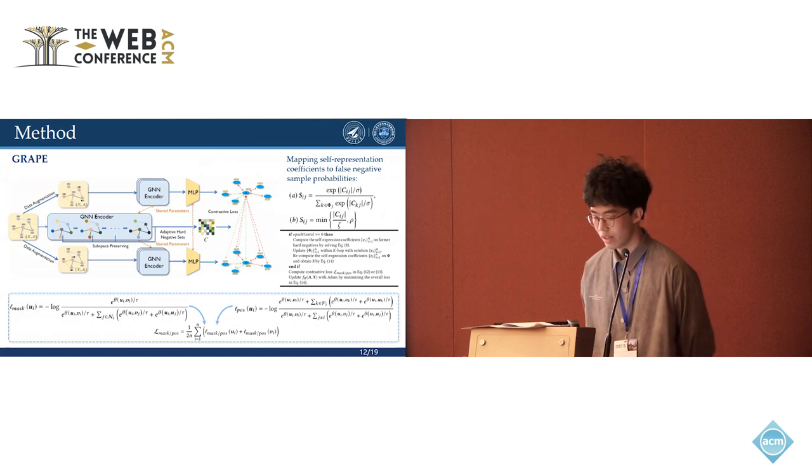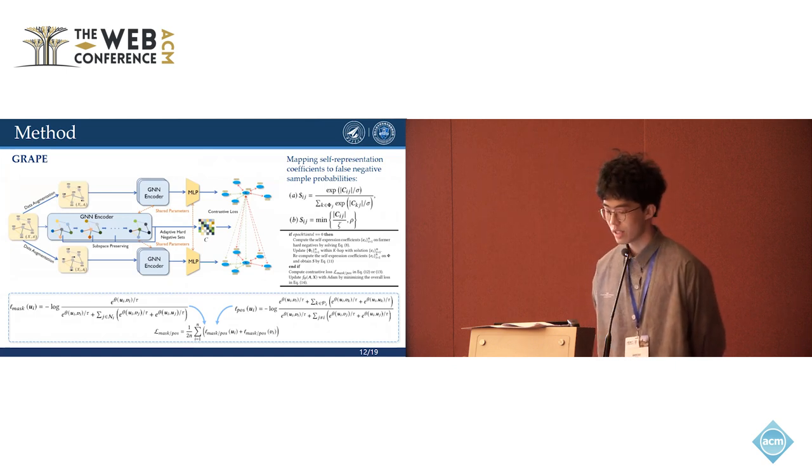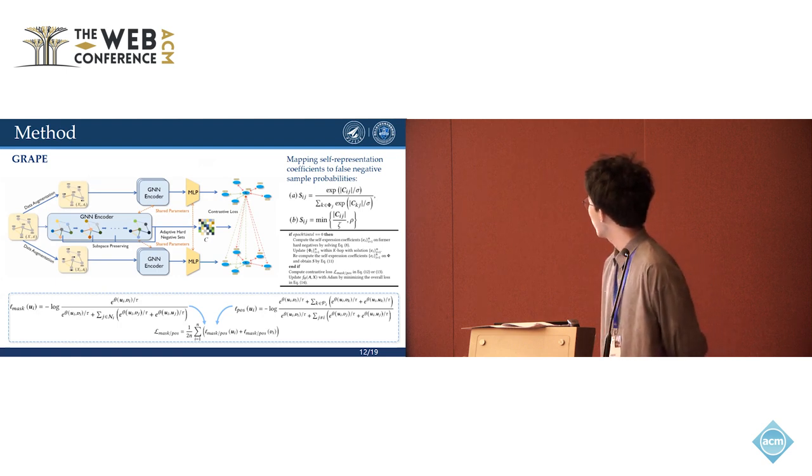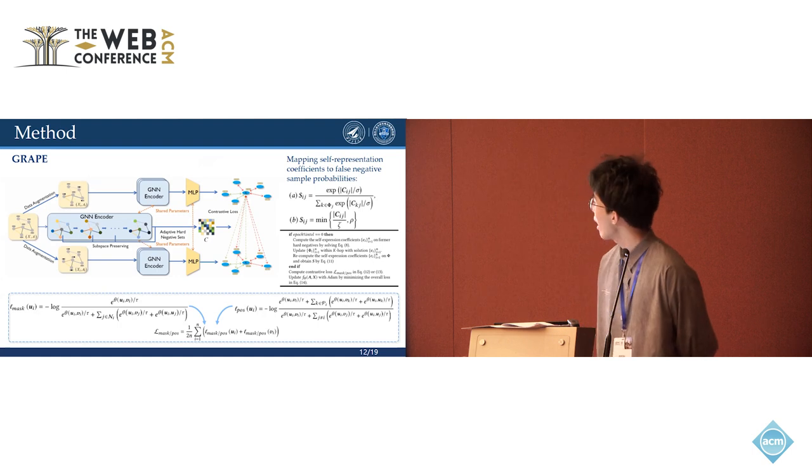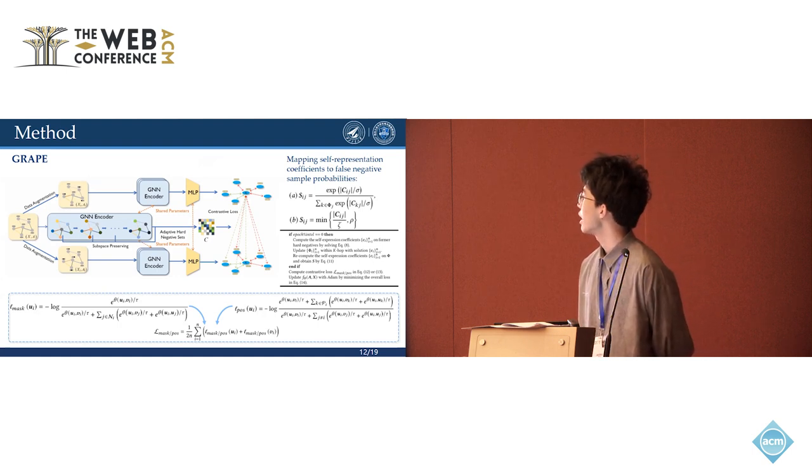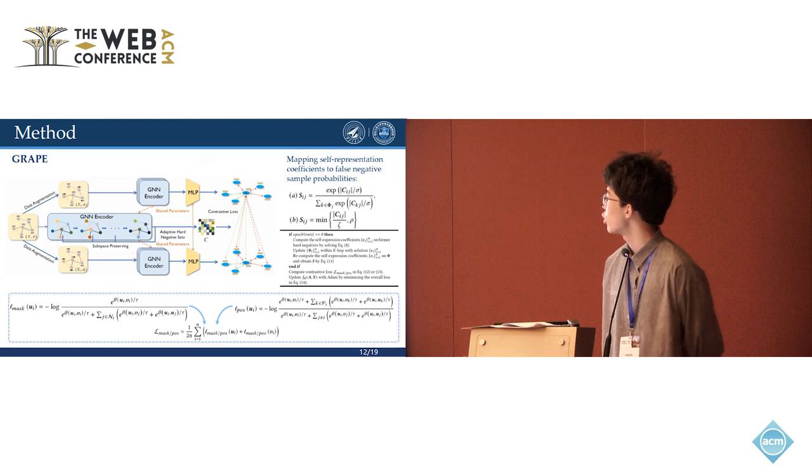And the revised contrastive loss can be computed and back-propagated. Here, L-mask is just to mask some hard-negatives with certain probability, and L-pos is just to treat them as positives with certain probabilities.